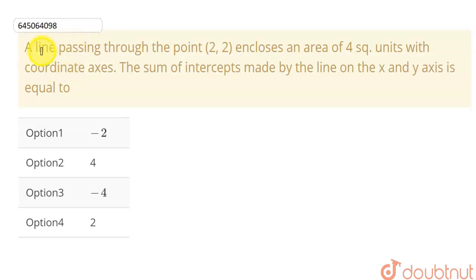In this question, we have given that there is a line which is passing through a point 2 comma 2 and encloses an area of 4 square units with the coordinate axis. We need to find the sum of intercepts made by this line on x and y axis.